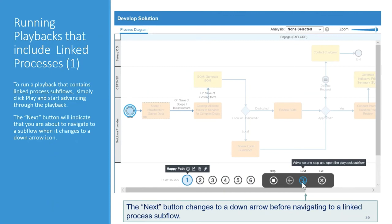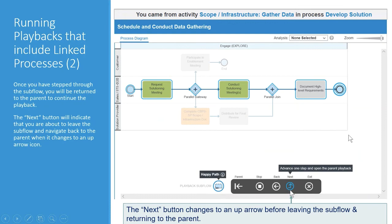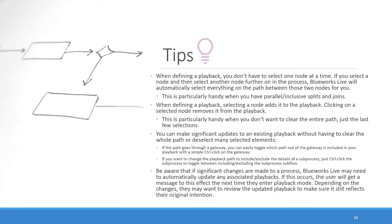To run a playback that contains linked process subflows, just click play and start advancing through the playback using the next button. When you're about to navigate to a subflow in a linked process, the next button will change to show a down arrow, indicating you're going down a level into a linked process subflow. Similarly, when you're inside that subflow and approaching the return, you'll see an up arrow telling you that clicking next will take you back up into the parent process to continue stepping through the overall playback.